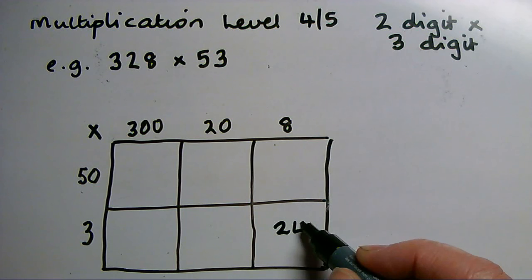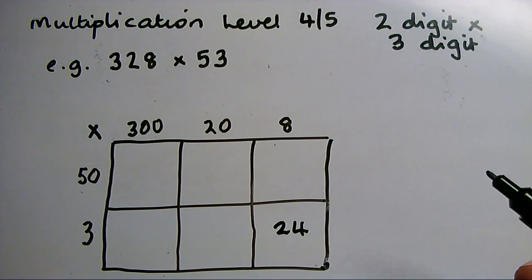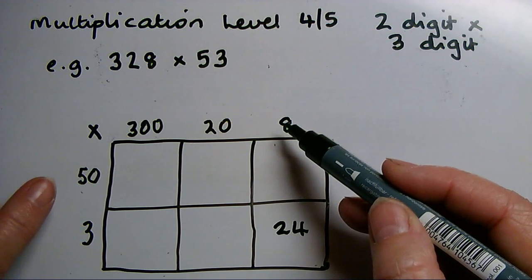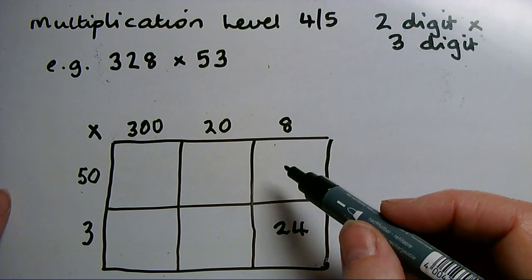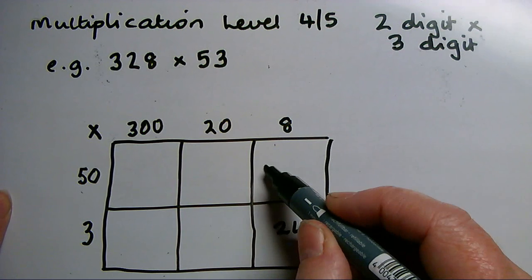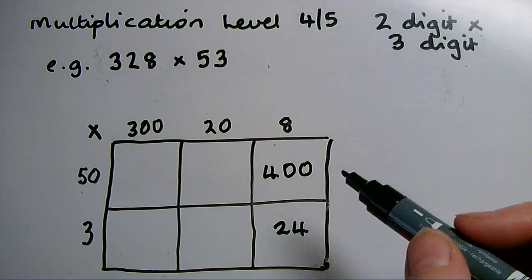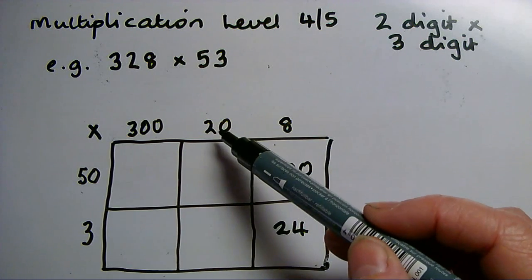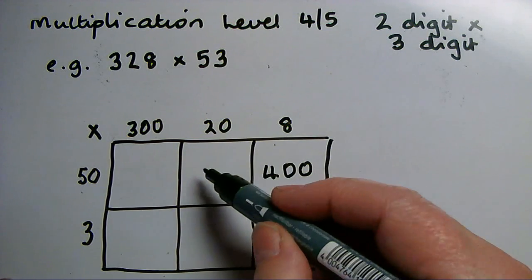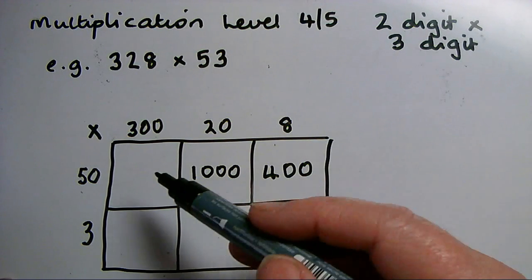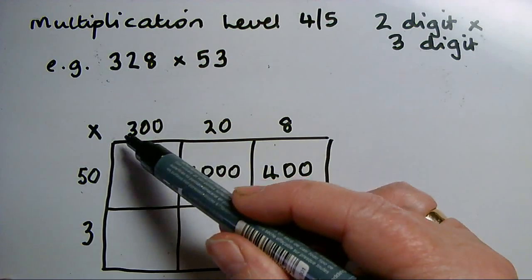3 times 8 is 24—that's the easiest one because there's no zeros to worry about. Now I'm going to fill in the rest of the boxes. 8 times 50: eight fifties is 400, so I'm going to write that in there. 50 times 20 is going to be 1000. 50 times 300, there'll...